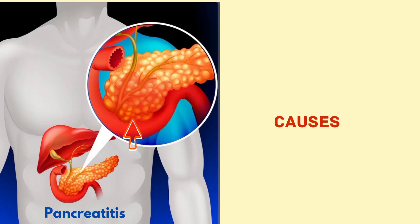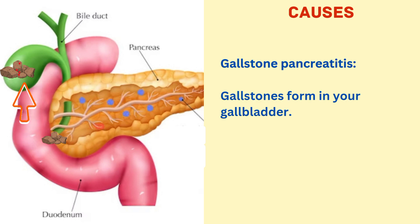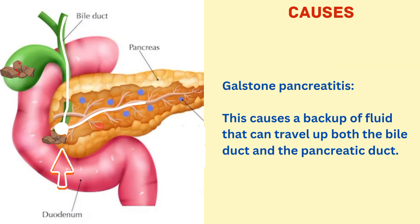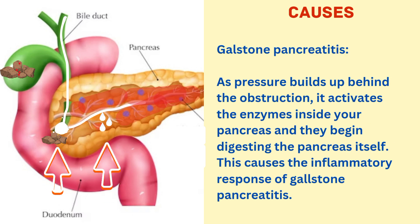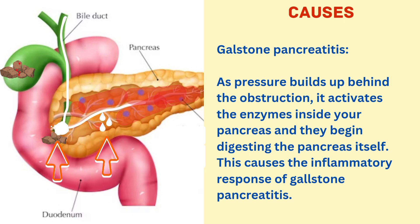Now let us see the causes of pancreatitis. The first cause is gallstone pancreatitis. Gallstones form in your gallbladder, but in cases of gallstone pancreatitis the stone travels from the gallbladder and blocks the opening to the first part of the small intestine. This causes a backup of fluid that can travel up both the bile duct and the pancreatic duct. As pressure builds up behind the obstruction, it activates the enzymes inside your pancreas and they begin digesting the pancreas itself, causing the inflammatory response of gallstone pancreatitis.